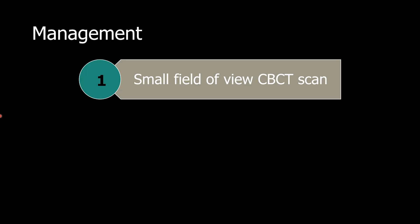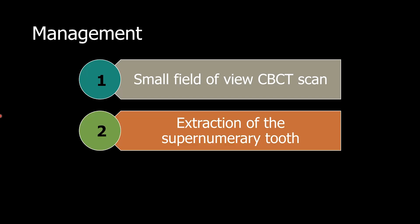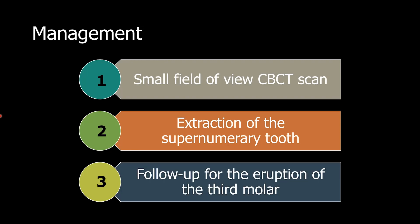Management of such a case is to obtain a small field of view CBCT scan. The scan will provide us with information about the position of the supernumerary tooth and its relationship with the permanent teeth. Once we know the location and relationship, the next step in management would be the extraction of the supernumerary tooth. Finally, we need to follow up for the eruption of the third molar.